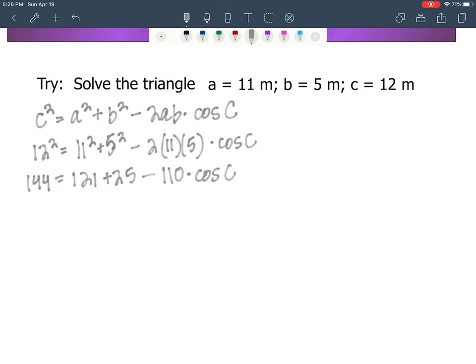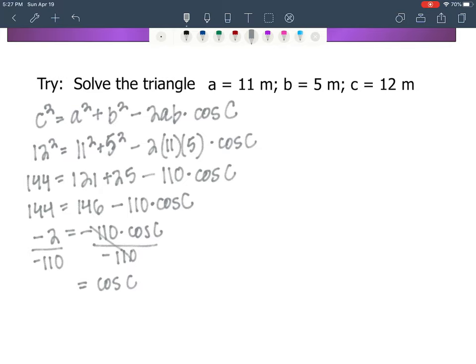And this is kind of important because I've got 146 on the right hand side. So I've got 144 equals 146 minus—remember that 110 is attached by multiplication to the cosine of C. We subtract 146 from both sides and we get negative 2 equals negative 110 times the cosine of C. I'm going to divide both sides by negative 110, and I get the cosine of angle C is equal to 2 over 110.